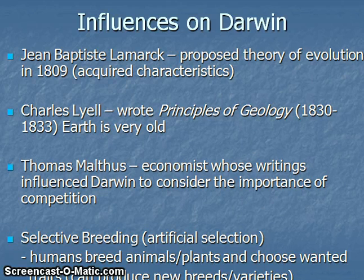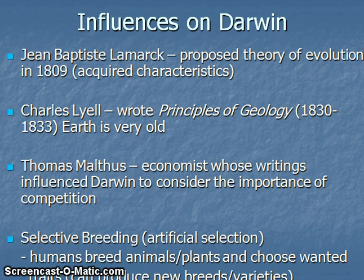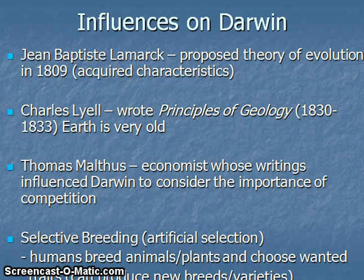Darwin had many influences — people whose writings caused him to formulate his ideas about natural selection. One important influence was Jean-Baptiste Lamarck, who proposed the theory of evolution in 1809. Lamarck's theory, commonly called acquired characteristics, has really been discredited, though interestingly, within the world of microbes, there are times where we might argue that Lamarckian evolution kind of works. Another important influence was Charles Lyell, who wrote Principles of Geology (1830–1833). The key idea important to Darwin was that the Earth was very, very old — much older than the 5,000 to 6,000 years most people believed — allowing the timeframe needed for evolutionary change to occur.